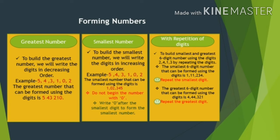To form the greatest six-digit number, write the digits 5, 4, 3, 1, 0, and 2 in descending order — from largest to smallest. So the greatest six-digit number formed will be 5, 4, 3, 2, 1, 0 — that is 543210.